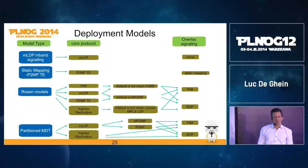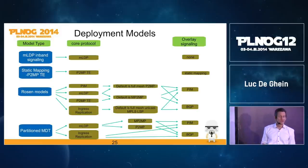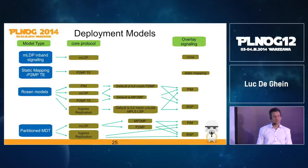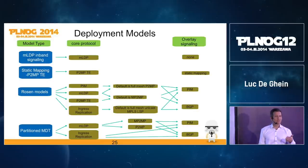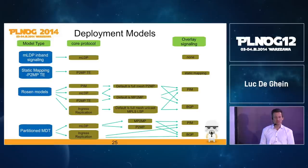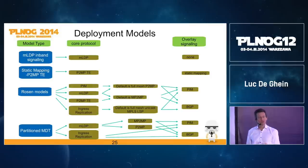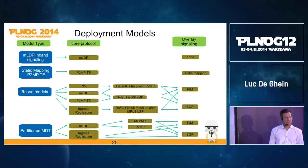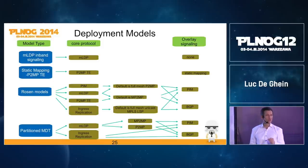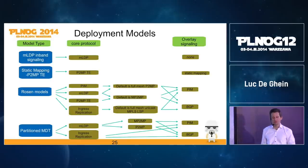In overview, the four deployment model types are: MLDP in-band signaling (no overlay signaling), static mapping (typically for P2MP-TE, no overlay signaling), Rosen models (the big one, with all four core protocols possible — PIM, MLDP, traffic engineering, ingress replication — and default MDT built by either a full mesh of P2MP trees or a multipoint-to-multipoint tree when using MLDP, with PIM or BGP overlay signaling), and partition MDT in two flavors — MLDP in the core, or ingress replication with no core signaling — again with PIM or BGP overlay signaling.